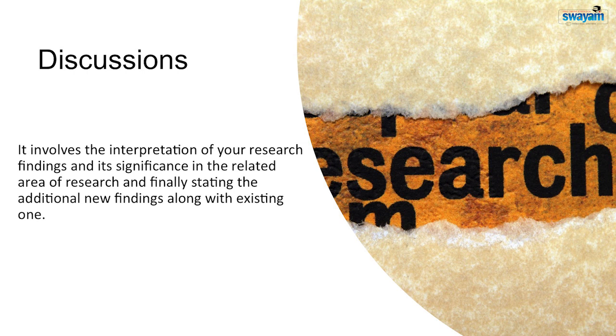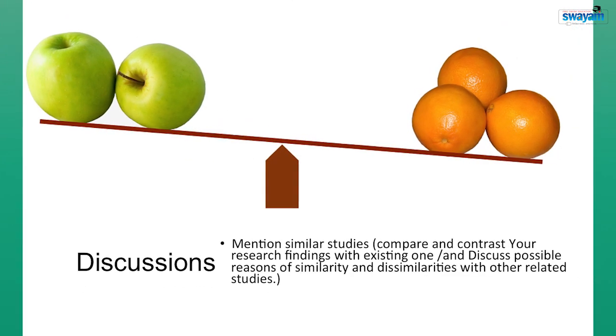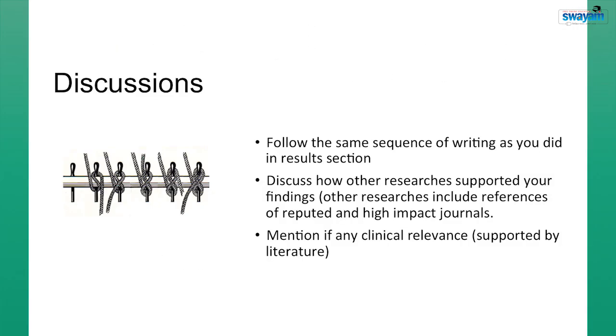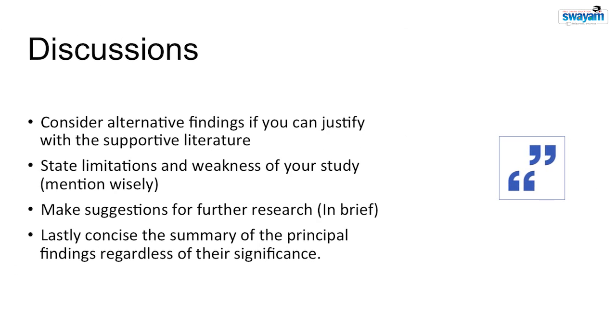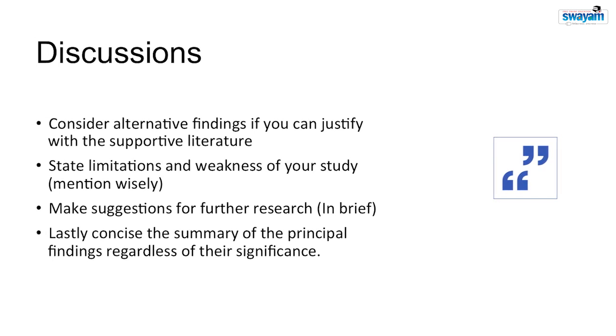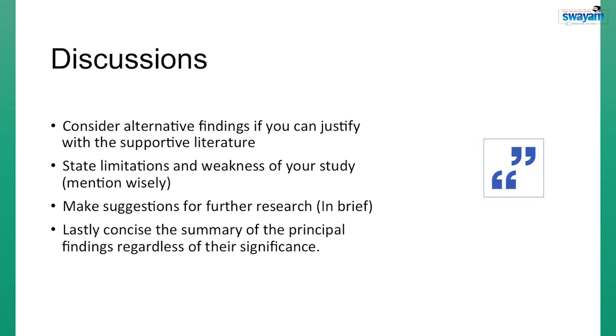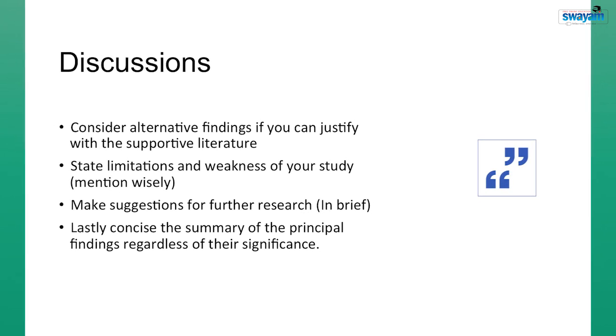You can start by writing your research problem in brief following importance of your study in context. Write it in brief just to bring the rhythm. Mention similar studies supporting as well as contradictory. Both kinds of studies must be discussed. Follow the same sequence of writing as you did in the results section. Discuss how other researchers supported your findings, supportive evidence. Mention if any clinical relevance is there. Consider alternative findings if you can justify with the supportive literature. State limitations and weakness of your study. Mention it wisely. Make suggestion for further research in brief. Lastly, concise the summary of the principal findings regardless of their significance.